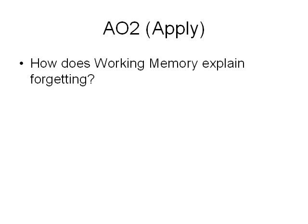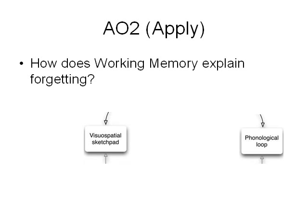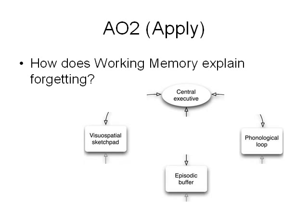The first thing you want to be able to do is break working memory down into its components. Is there a problem with the visuospatial sketchpad? Or is the phonological loop at fault? Possibly there's some error going on in the episodic buffer. Or the blame could lie with the boss — the central executive overseeing the whole process might be faulty.